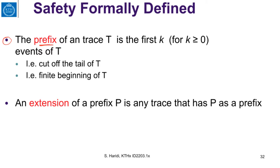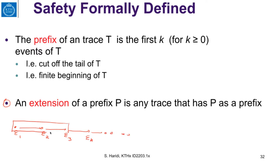Let us now start to define these properties formally. A prefix of a trace is the first k events of the trace — you take the first k events and that is a prefix of the execution or trace, so it is the finite beginning of a trace. An extension of a prefix P is any trace that has P as a prefix, so if we have a prefix P, an extension is any trace that extends P with additional events E-prime-4, E-prime-5, and so on.